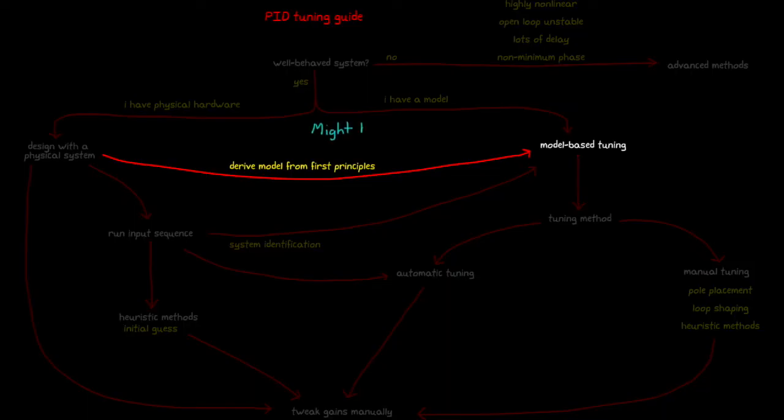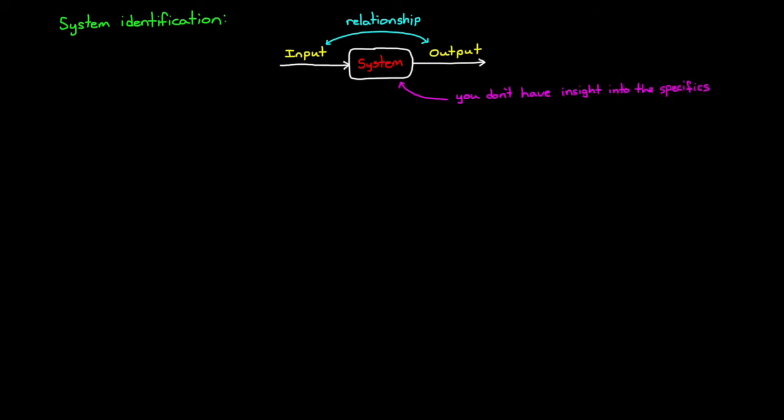Let's say that your system is too complicated to derive a model directly, either with differential equations or mechanical and electrical components, and instead you'd rather create a model of the hardware using system identification techniques. System identification allows you to generate a model without knowing the details down to the fundamental physical concepts. Instead you can rely on the relationship between the input signal and the output response to infer a model of the system. This is sometimes referred to as the black box method because you don't have to have insight into the specifics of the system.